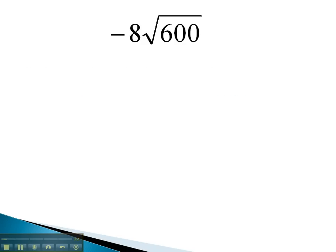In this problem, we have negative 8 multiplied by the square root of 600. Again, we'll simplify the 600 by finding the prime factorization. Divisible by 2, 300 times; 2, 150 times; 2, 75 times; 3, 25 times; 5, 5 times; and 5 once.